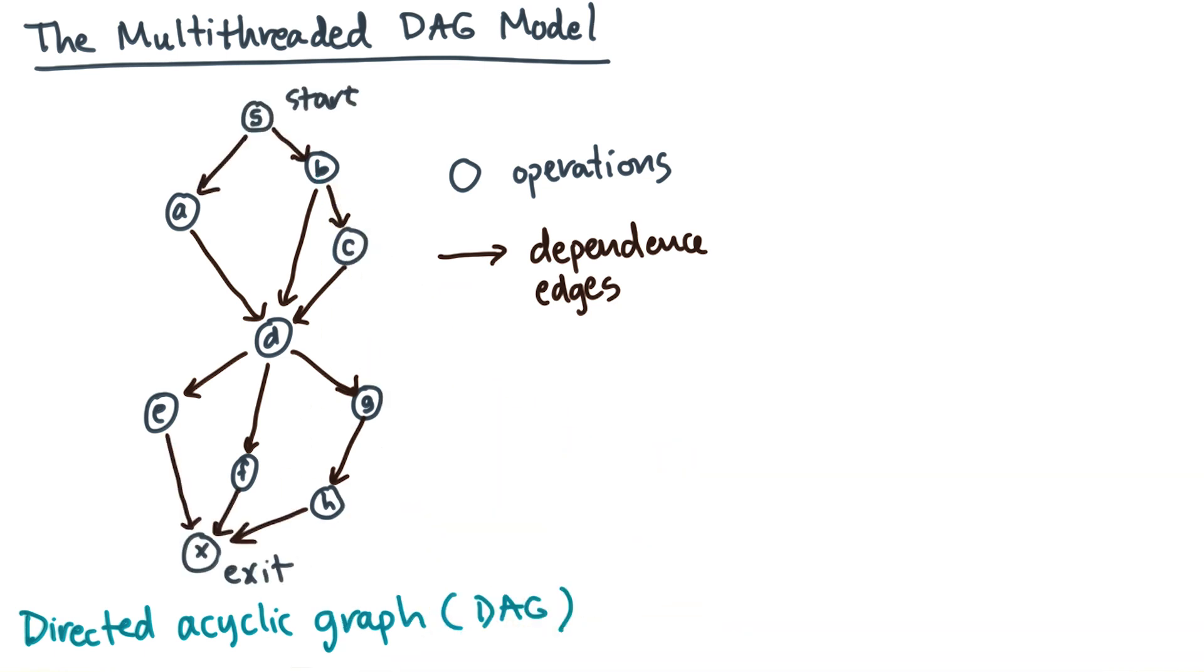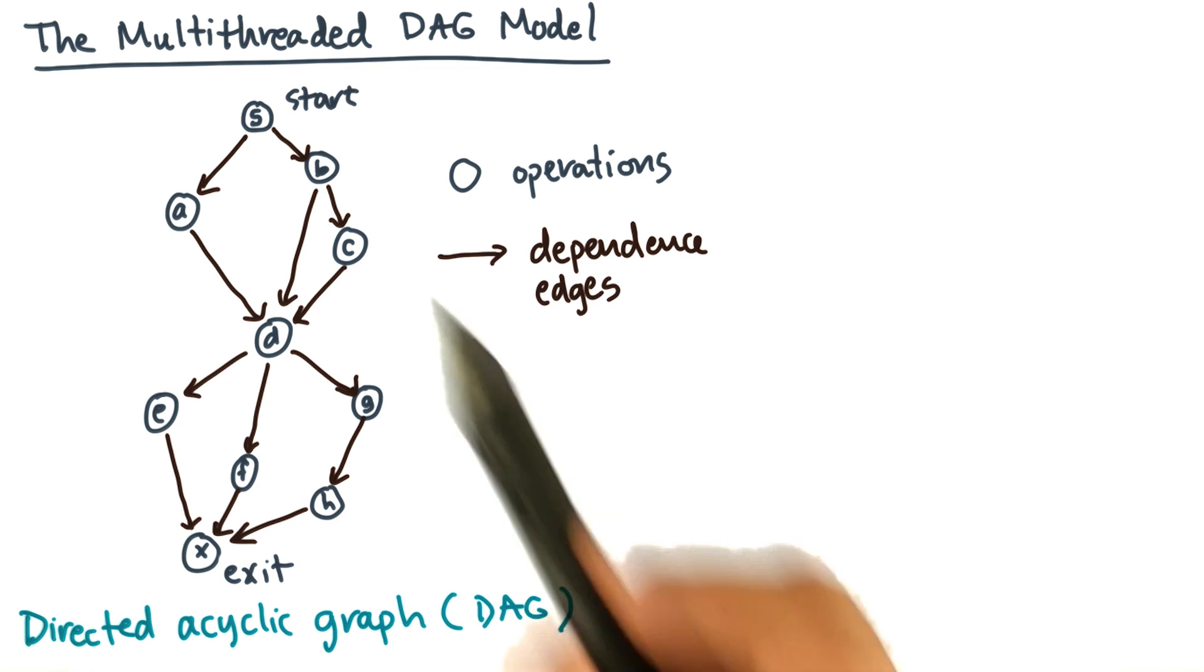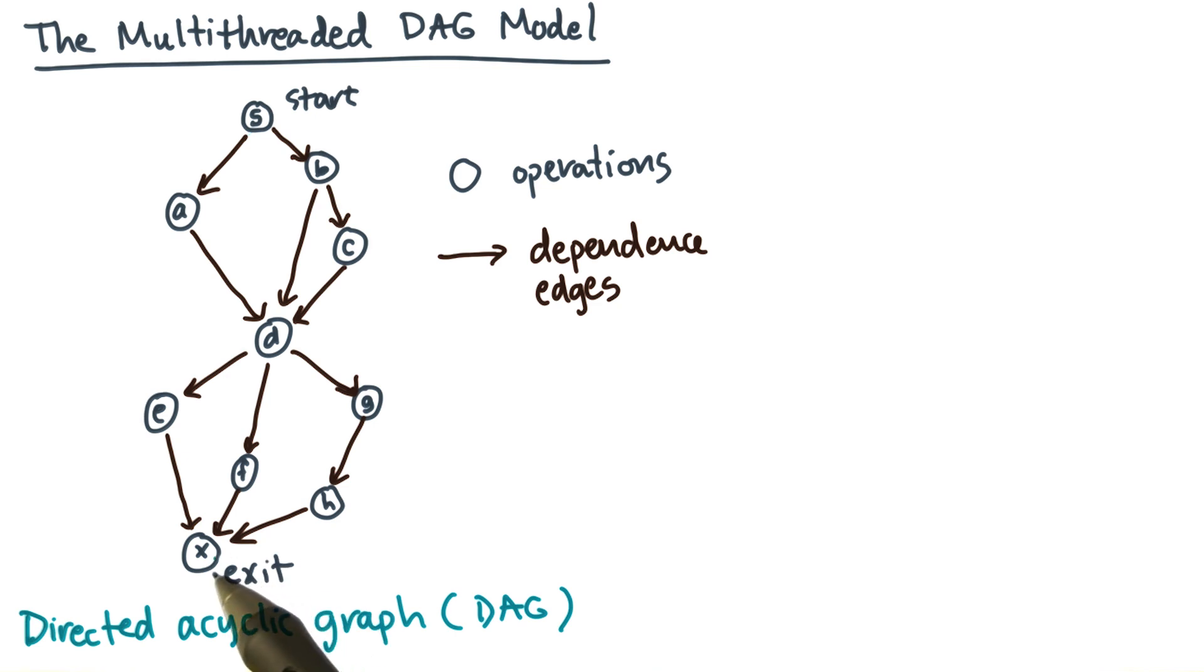Now to keep things simple, I'll always ask you to assume that there's exactly one starting vertex and one exit vertex. So in this example, here's the start, and here's the exit. And of course, if you have a DAG and there are no such vertices, these start and exit ones, it's pretty easy to add them.